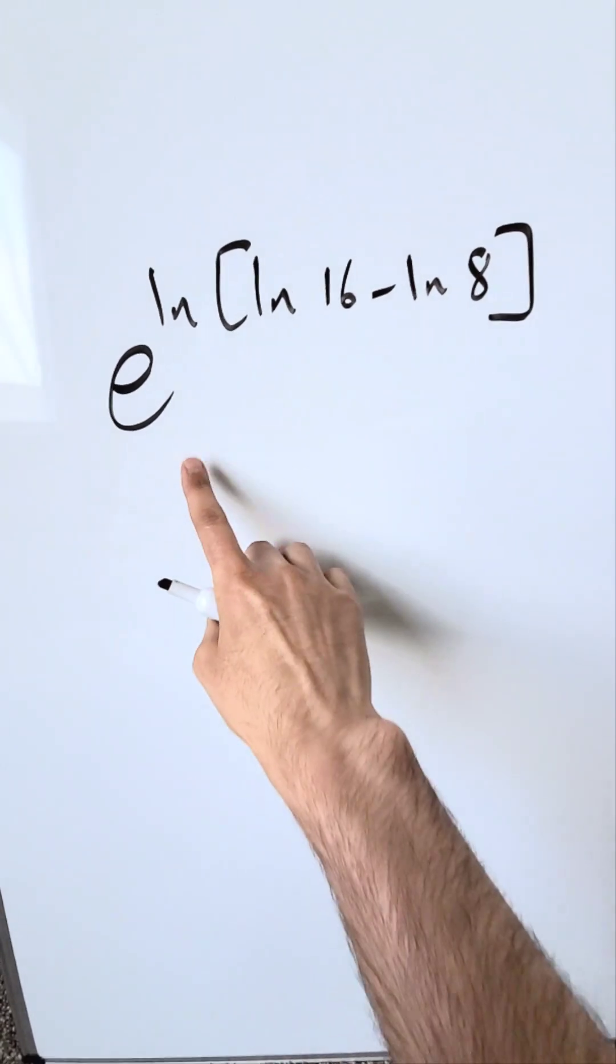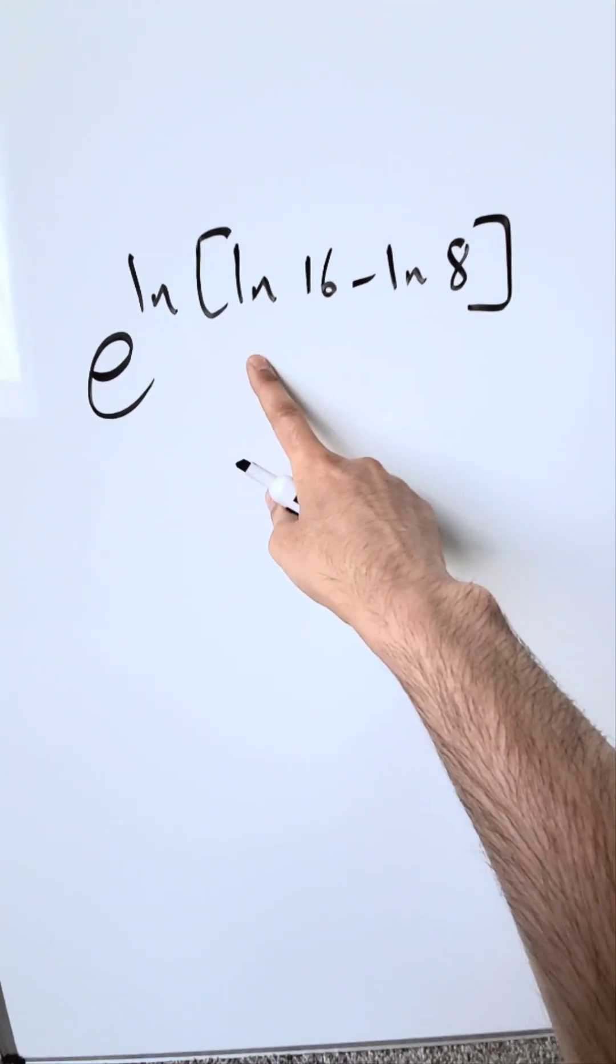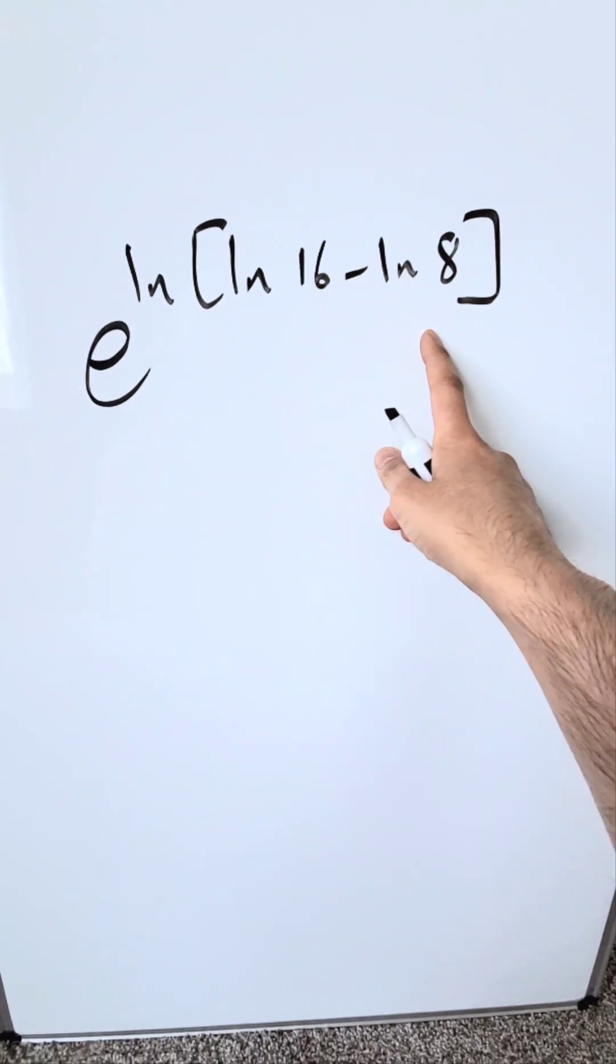Let's evaluate this expression. I have e to the power of all of this, natural log of, natural log 16 minus natural log 8.